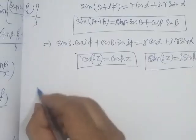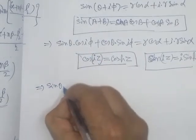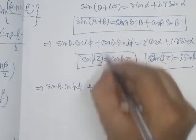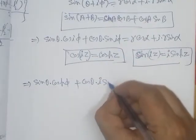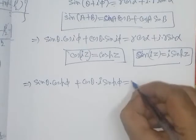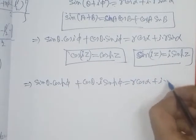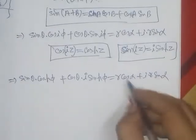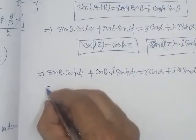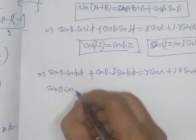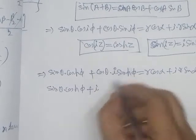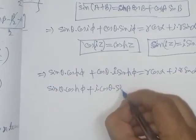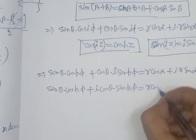Using the hyperbolic conversion identities, the left-hand side becomes sin θ·cosh φ + i·cos θ·sinh φ, and the right-hand side remains r·cos α + i·r·sin α. Equating real and imaginary parts: the real part gives sin θ·cosh φ = r·cos α, and the imaginary part gives cos θ·sinh φ = r·sin α.